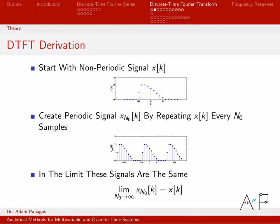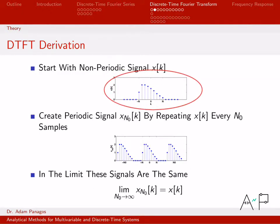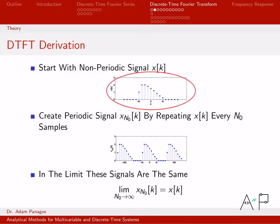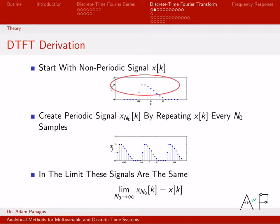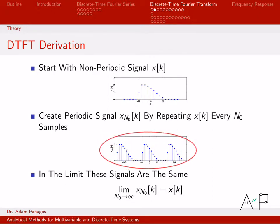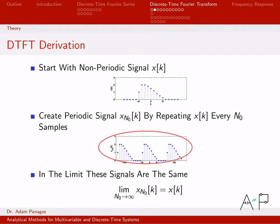Our strategy is to use what we know about the DTFS. We're working with non-periodic discrete time signals — here's a cartoon of a non-periodic signal x of k. We want an equation that describes the frequency domain content of this signal. Right now we don't know how to do that because all we know how to deal with is periodic signals. So here's what we'll do: create a new periodic signal x sub n-naught of k by taking the interesting content of the signal and repeating it along the time axis in increments of n-naught. This signal is not equal to the original, but we now have a periodic signal and we know how to write down the discrete time Fourier series.